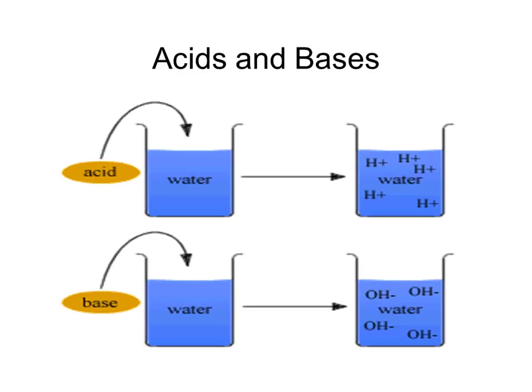This picture shows what happens when we put acids and bases in water. We end up with the ions breaking off from the rest of the compound — we see hydrogen ions floating around with acid, and hydroxide ions floating around with the base.